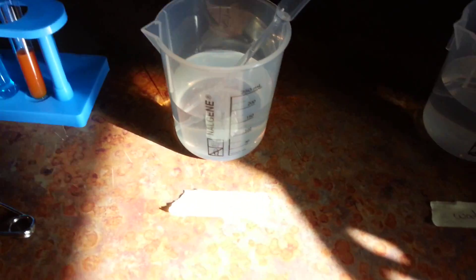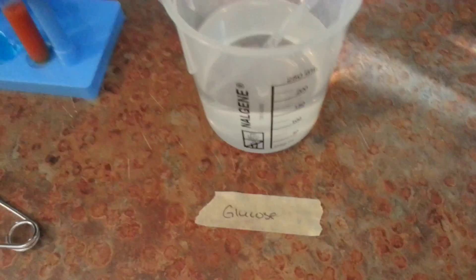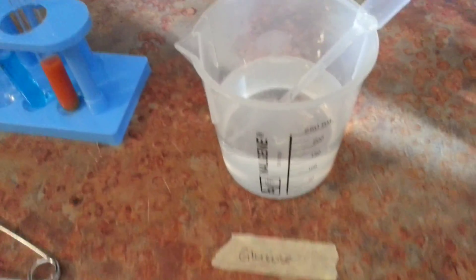Whenever you're running the test instead of writing on the beakers I'm going to recommend that you label some tape and then put the beakers in front of the tape and as long as you stay organized you should always know what's in each beaker.